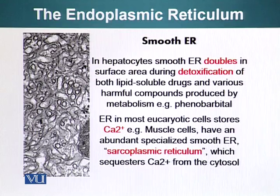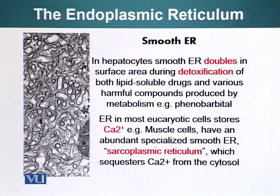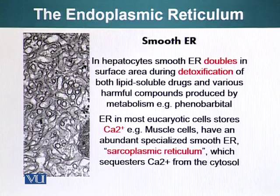ER in most eukaryotic cells stores calcium ions, which act as a secondary messenger. In muscle cells, for example, there is abundant endoplasmic reticulum referred to as sarcoplasmic reticulum, one of whose functions is sequestering calcium ions from the cytosol. We know that an abundance of calcium ions in the cytoplasm acts as a secondary messenger and can convey different signals to the cell.